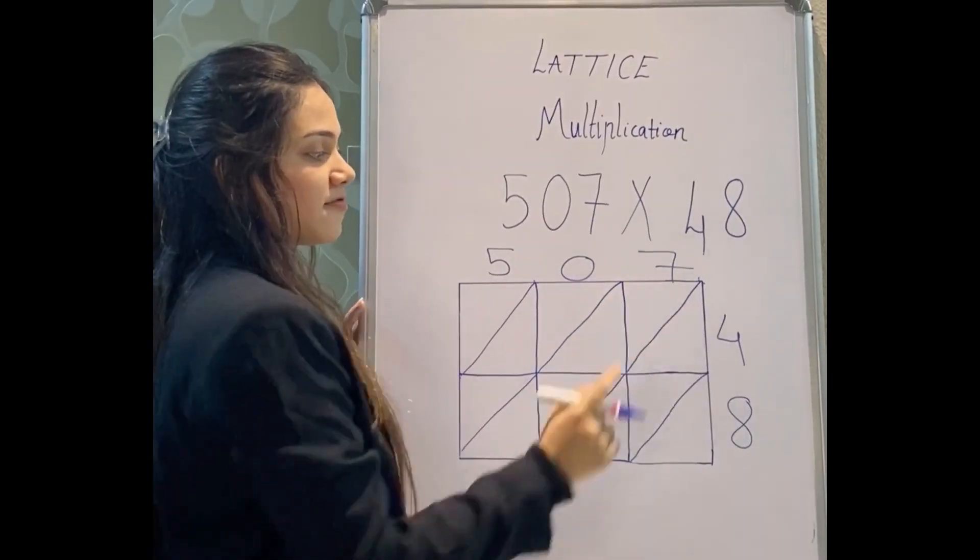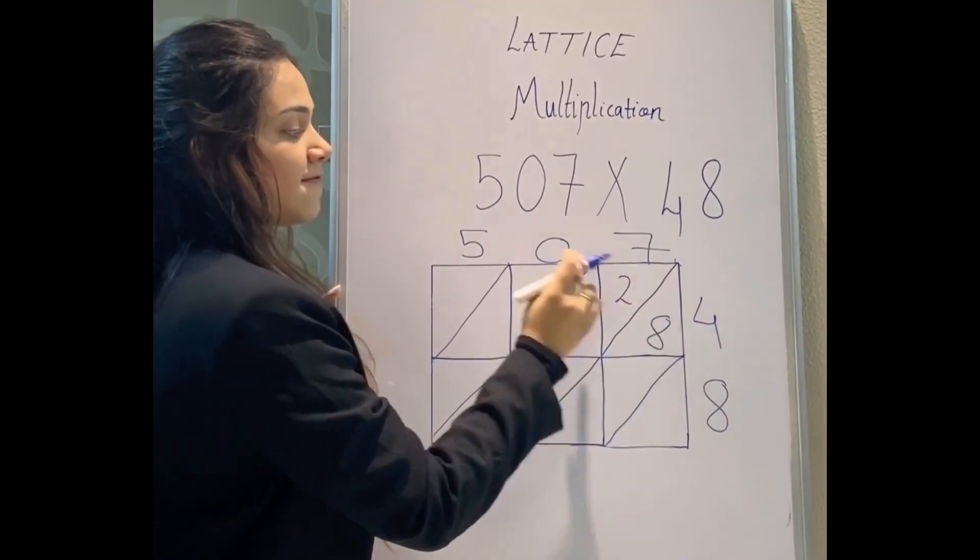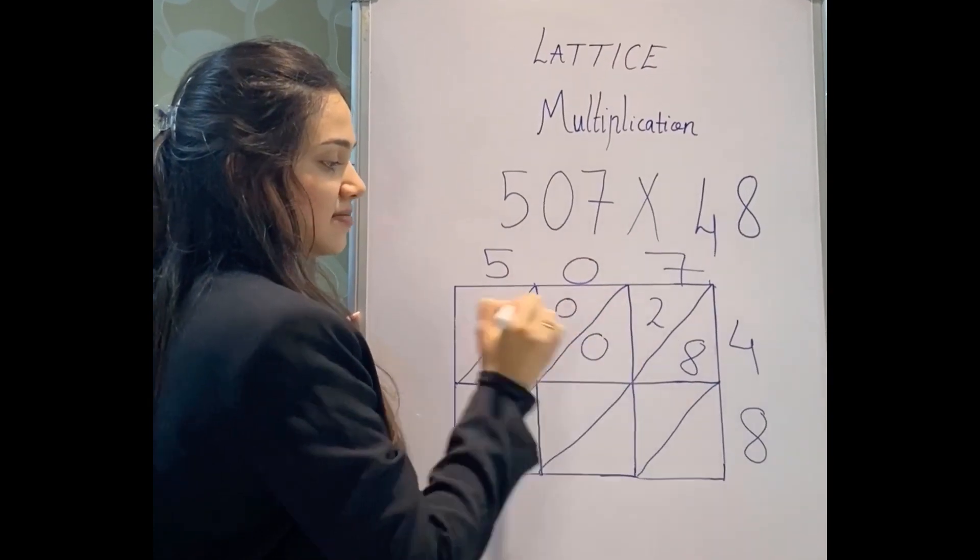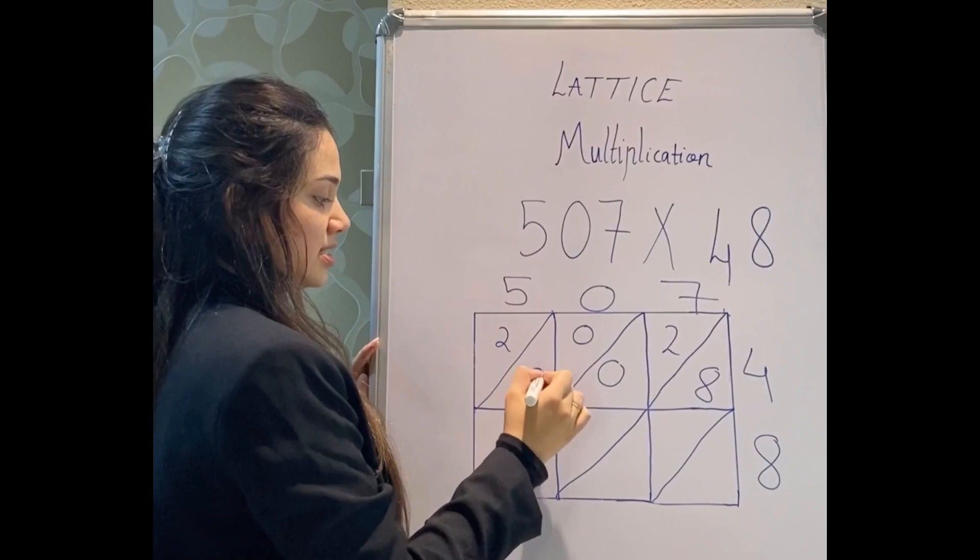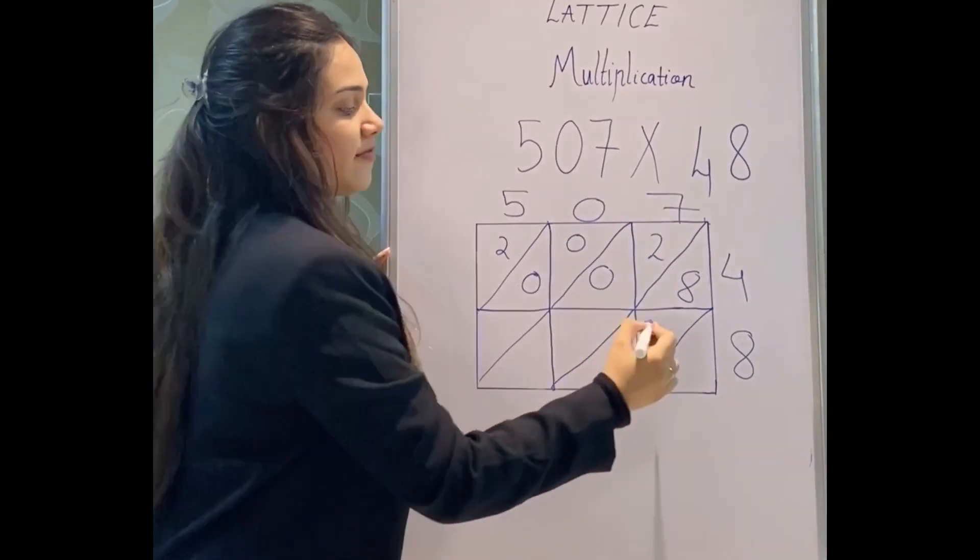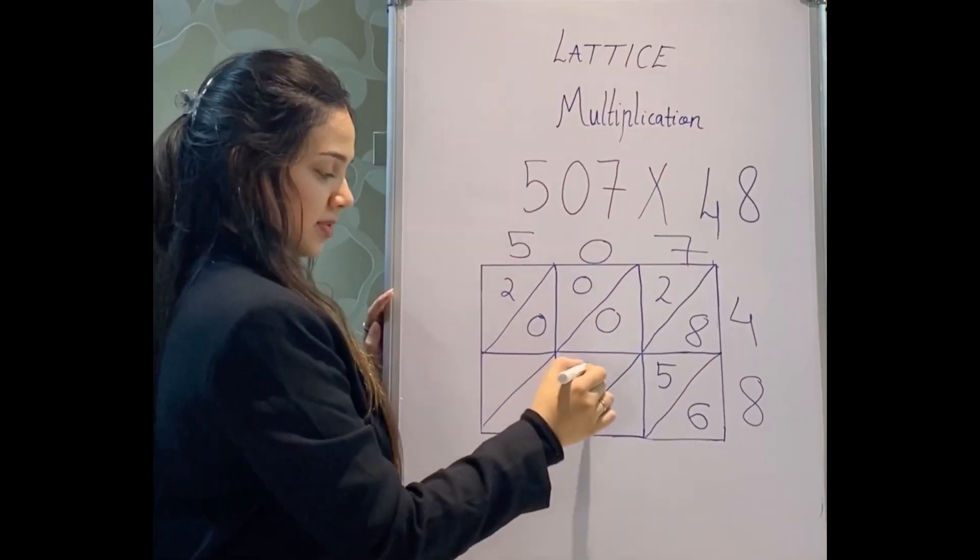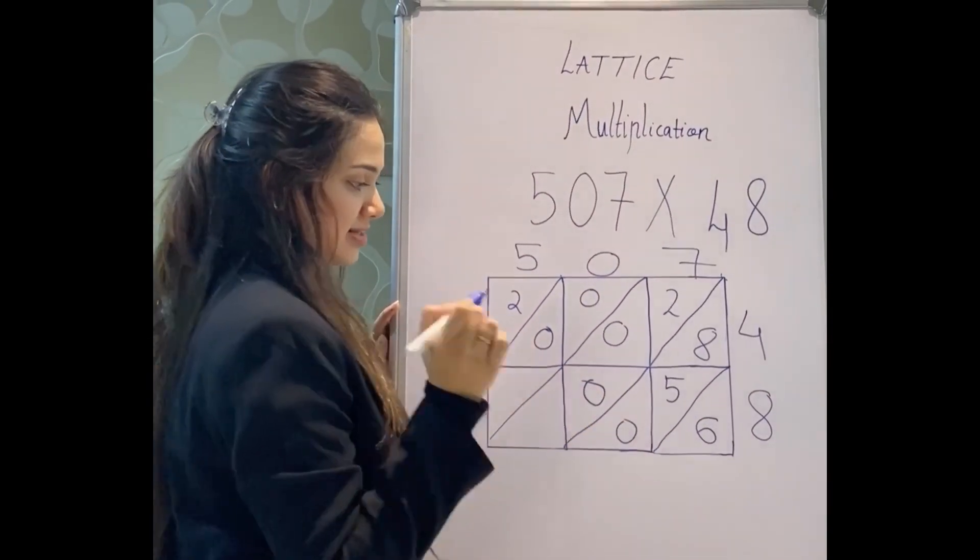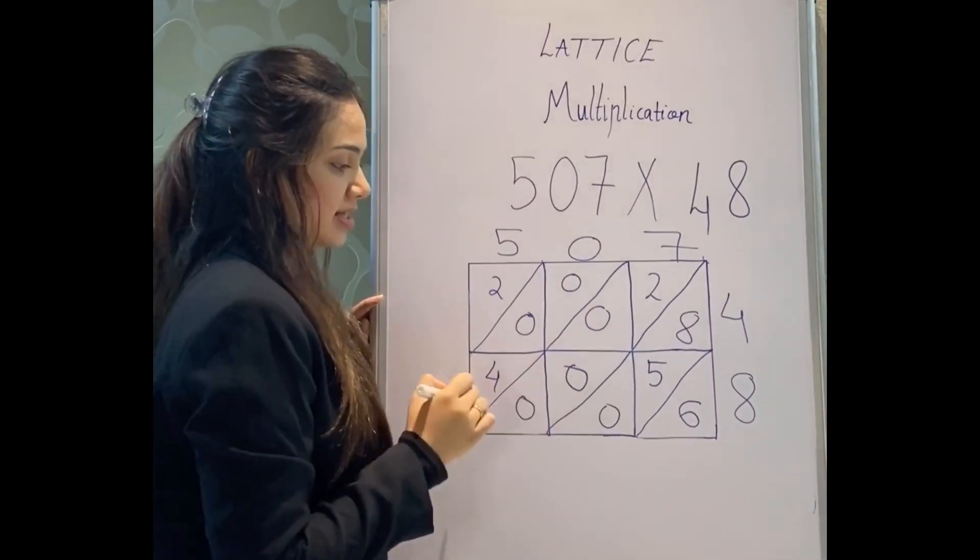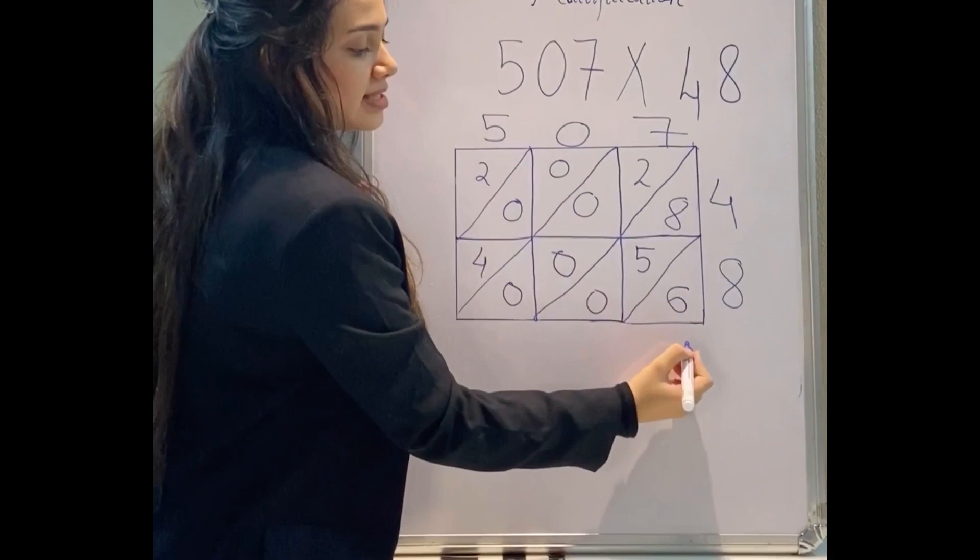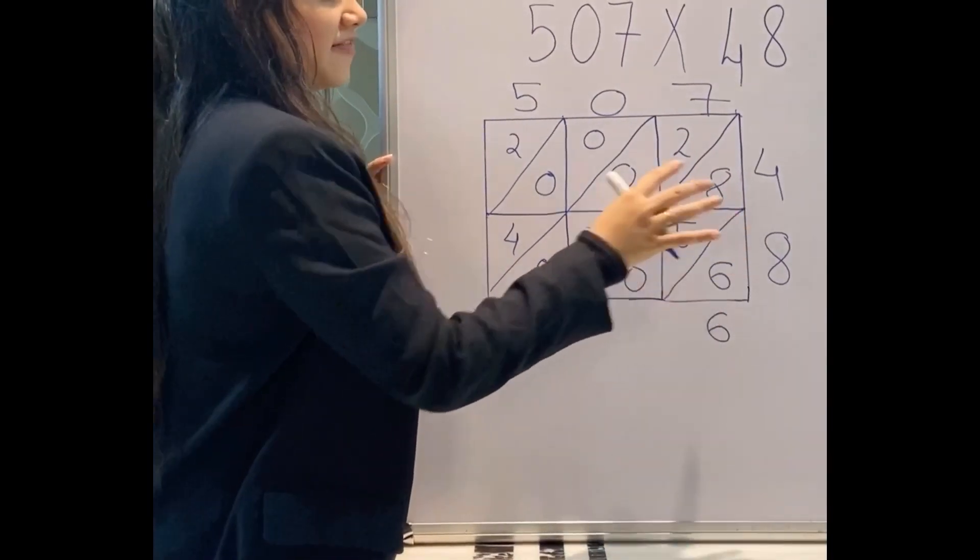Now 7 × 4 is 28. 4 × 0 is 0, so I'll be writing 0, 0. 4 × 5 is 20. 8 × 7 is 56. 8 × 0 is again 0, 0. 8 × 5 is 40. 4 will come here and 0.